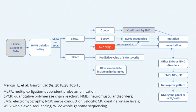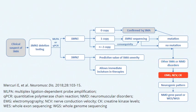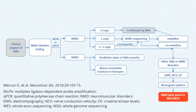The third situation is if we find two copies of SMN1. In this situation, frequently we will rule out the diagnosis of SMA, and it's important to proceed with other different diagnostic tests for neuromuscular disorders, including CK level, electromyography, and also exome or genome sequencing.